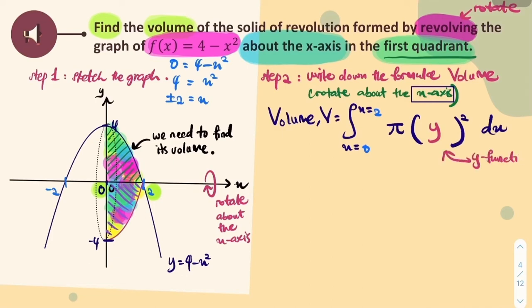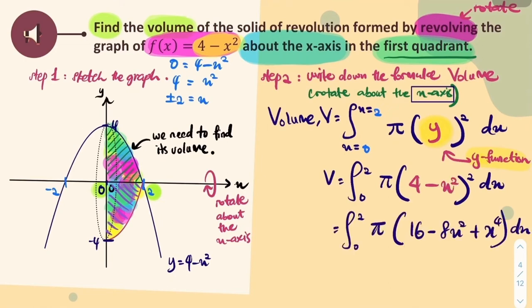Your y-function now is 4 minus x squared. So you replace the y into becoming 4 minus x squared, and then you solve it. Integrate it.